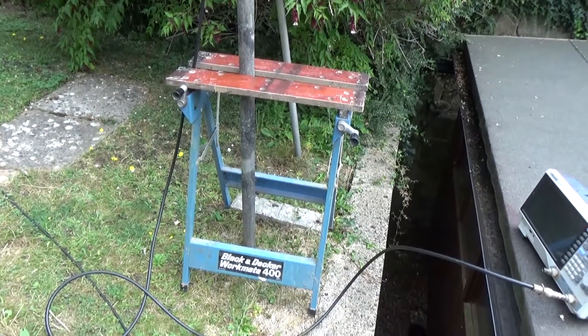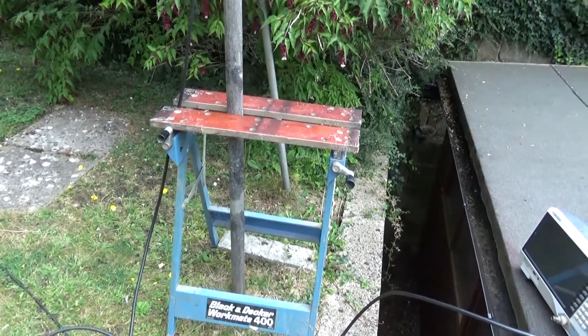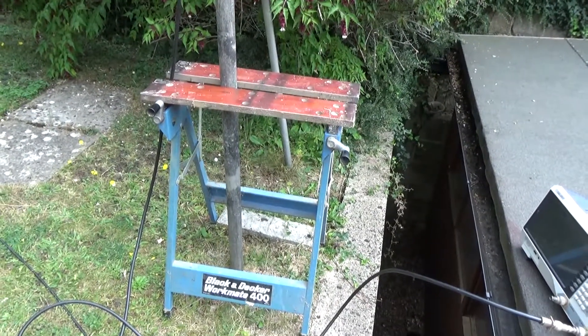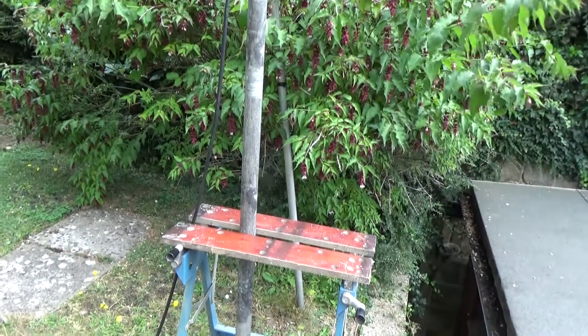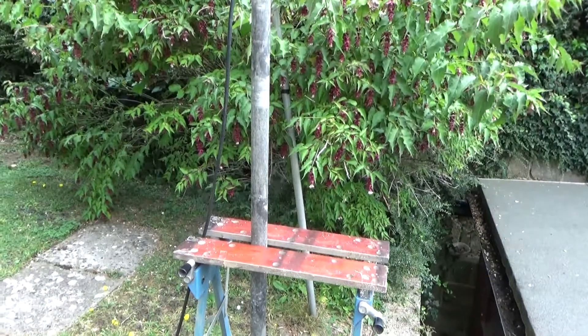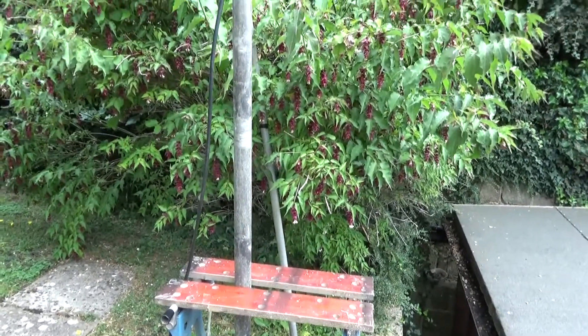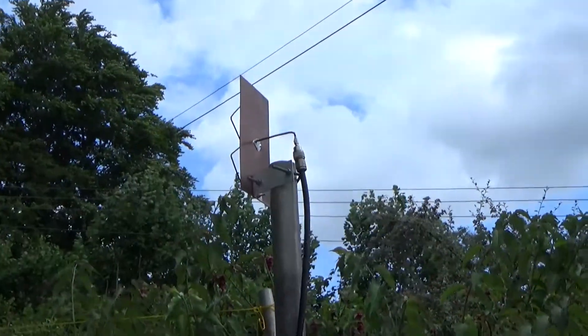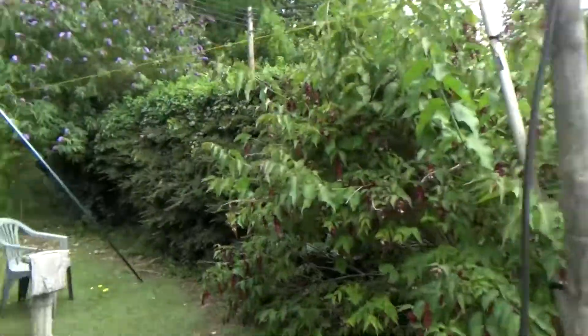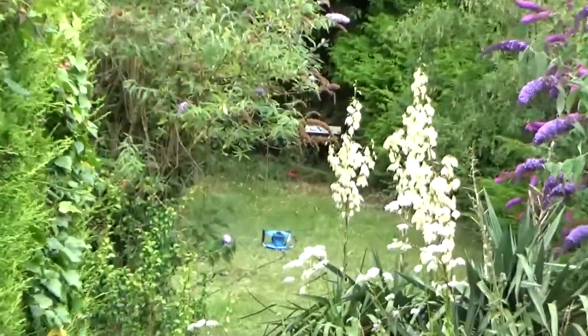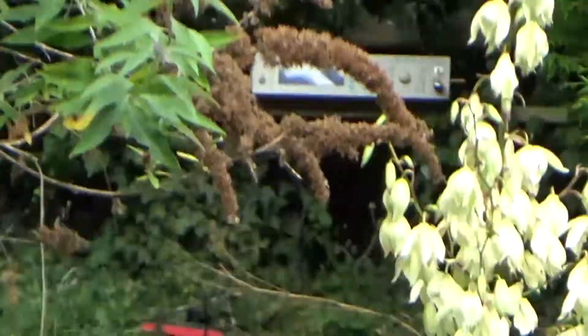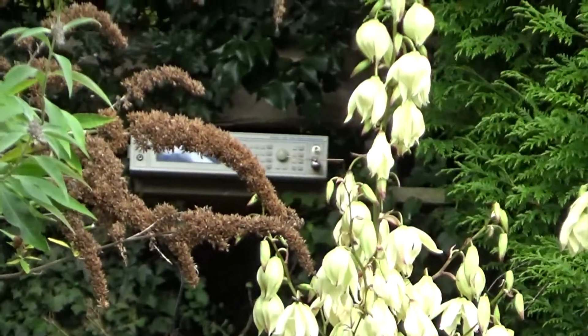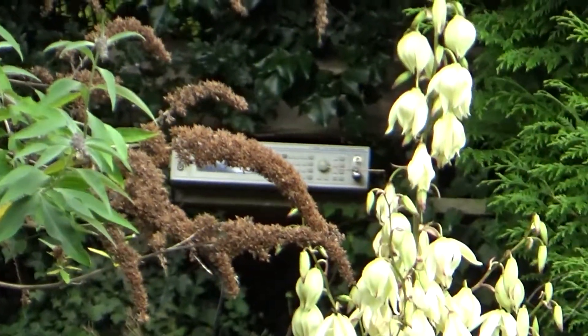Right, here's my test setup. I'm using my trusty Black and Decker Workmate which I've had for about 30 odd years, quite useful for supporting aerial poles when doing antenna testing. There's the little bi-quad up on the top. If I look up the garden you can just about see the signal generator which is outputting 0 dBm on 1296 megahertz with a little half-wave dipole on the output socket.